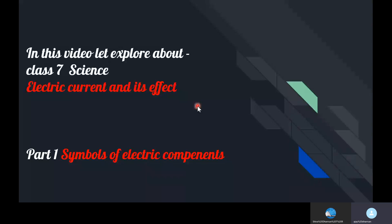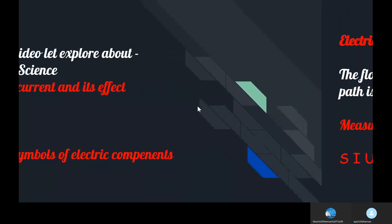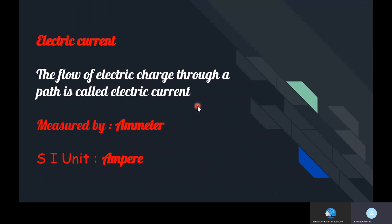Now let's jump into our video. In this video we will explore Class 7 Science: Electric Current and Its Effect, Part 1 - Symbols of Electric Components. Before going to the topic, let's have a quick recap. Electric current: the flow of electric charge through a path is called electric current.